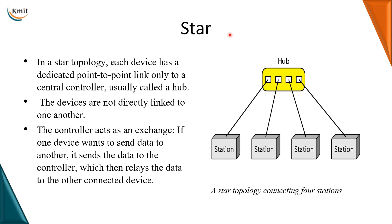Now let us go to the star topology. In star topology we will not have a direct dedicated link between each device and the other device. Instead, all the devices will have a point-to-point link to a central controller called a hub. Every station will make a connection to the hub. The stations are not directly connected. Whenever one station wants to transmit data to another station, it sends the data to the central controller, which relays the data to the other connecting devices. You can see a star topology connecting four stations with a central controller, also called a hub.